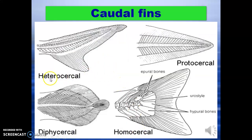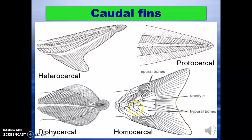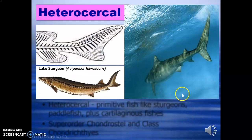Next we come to the caudal fins — this type is called heterocercal, where the tail lobe is extended towards the dorsal end, while the bottom ventral lobe is shorter. Then there is the protocercal, which is a pointed tail. You can also see the diphycercal — a curved-shaped tail with a finger-like projection at the end. In homocercal, the tail is evenly forked. Bones involved include the epural, eurosteal, and hypural bones, followed by heterocercal.